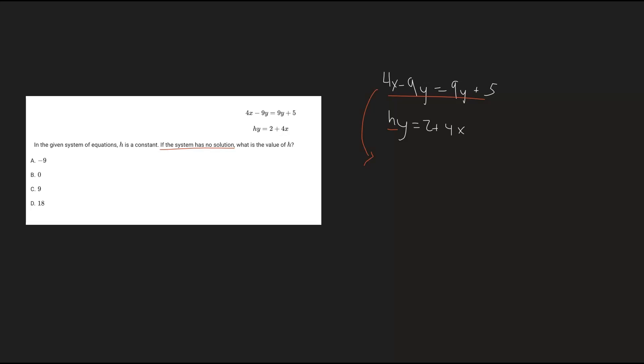So the top one right here, what we can do is add 9y to both sides, and then we want to subtract 5 from both sides just so we can isolate for y. So we have 18y equals 4x minus 5. And now for slope-intercept form, we'll just divide both sides by 18. So y will be equivalent to 4/18x minus 5 over 18.